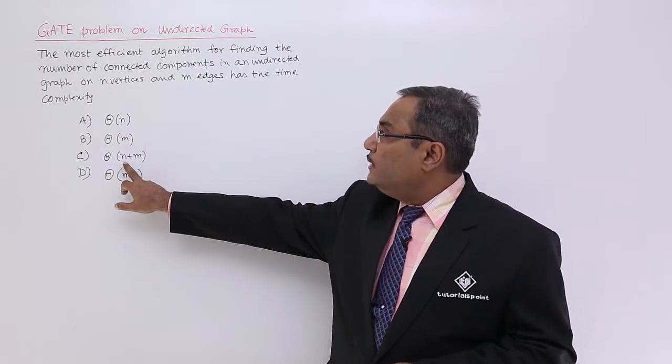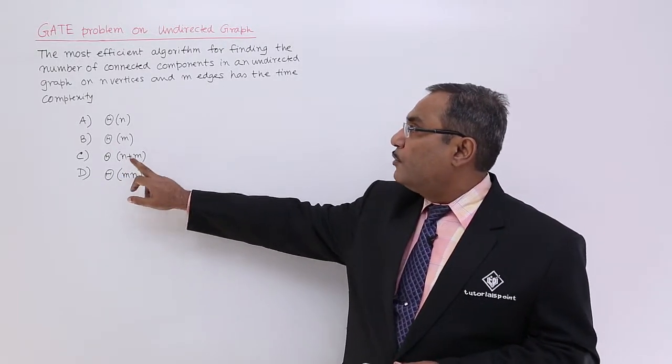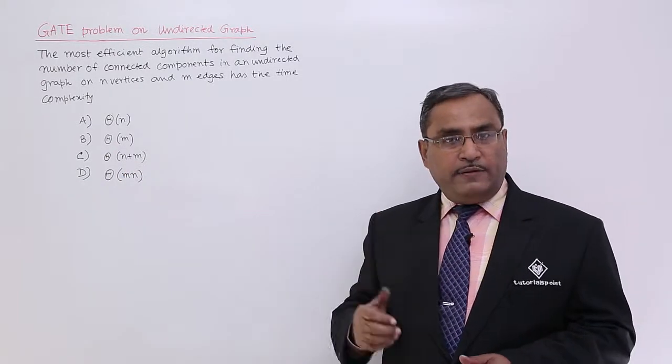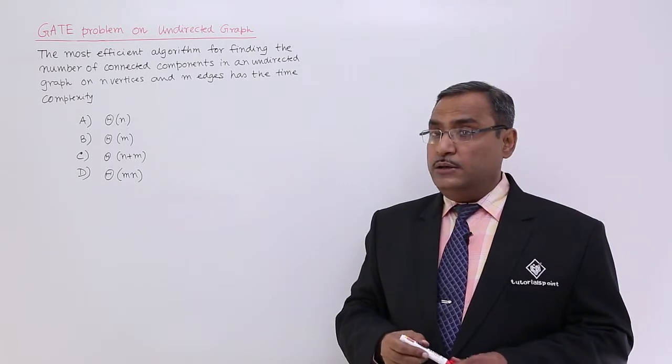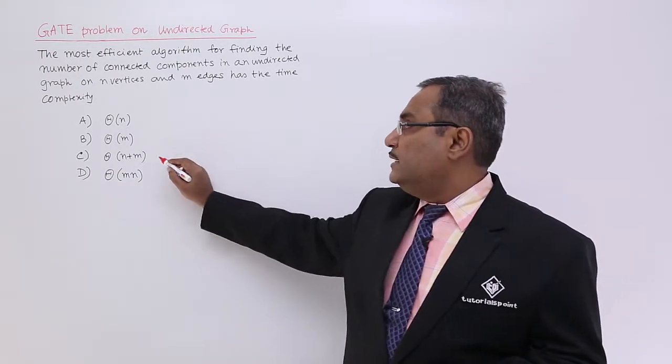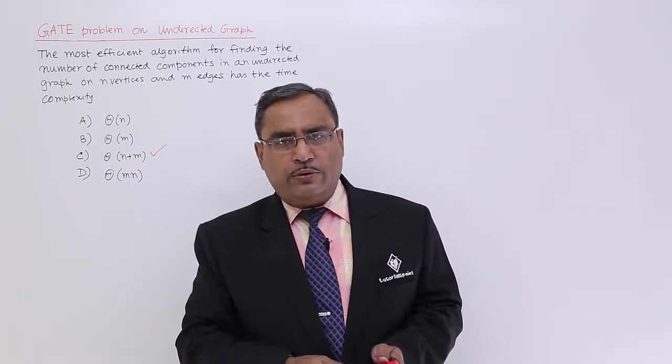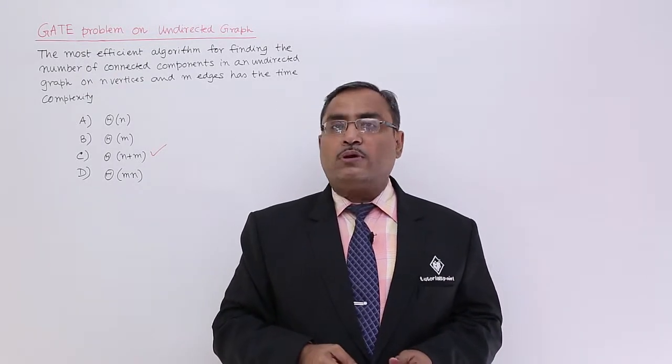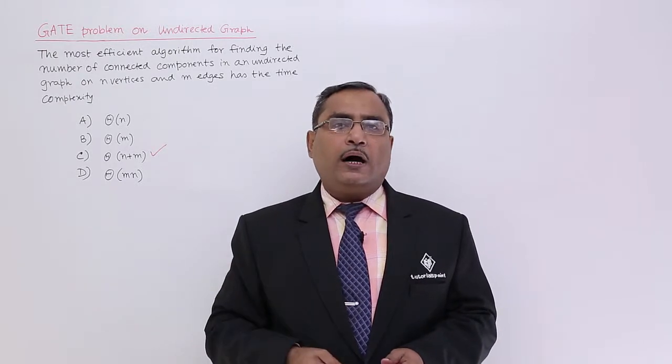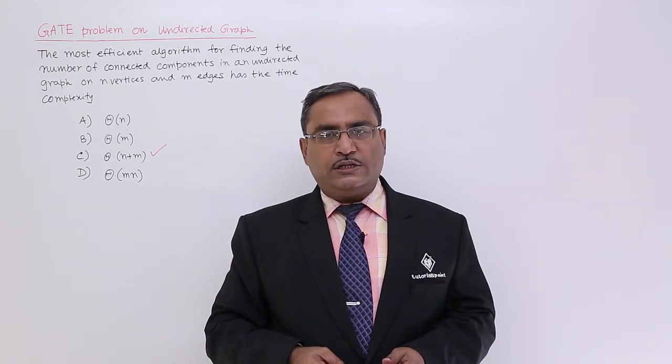N will be the number of vertices and m is the number of edges. That is why it is given in the question paper, so we will be going for option number C. In this way, such questions can be answered within a very short duration of time, saving more time for answering other questions. Thanks for watching this video.